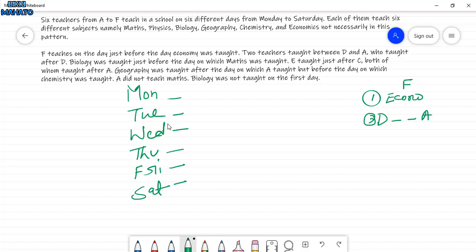A who taught after D, so this is right that after D, A will be there. Biology was taught just before the day on which Maths was taught. So Biology which day, just before Maths. This is our third number point.